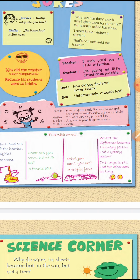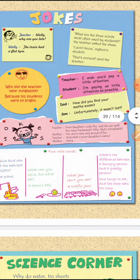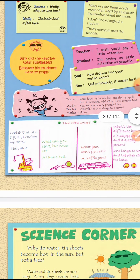Next joke in the magazine: Dad asks his son, 'How did you find your maths exam?' The son answers, 'Unfortunately, I wasn't lost' — meaning I didn't forget, I just couldn't do it. So these are the types of jokes featured in the wall magazine.